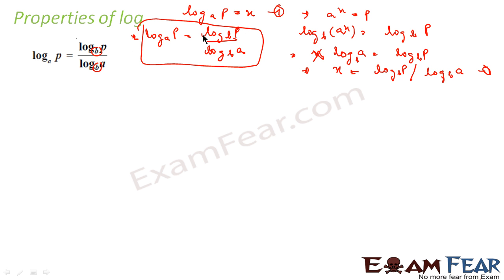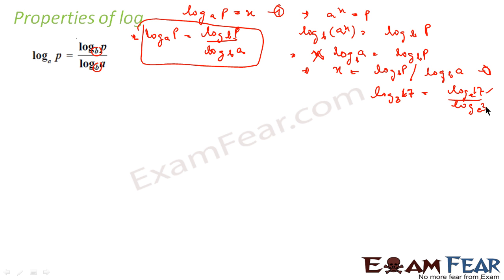So I proved this property. This is used generally when you have some log to some base and you want to introduce a new base. For example, log 17 to the base 3 — you don't know how to find this, but you have a log table. You can convert it as log 17 to the base e divided by log 3 to the base e, and find both values from the log table.